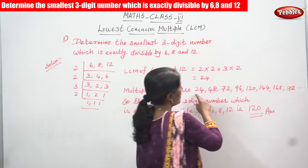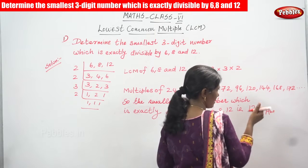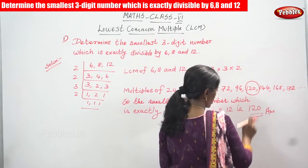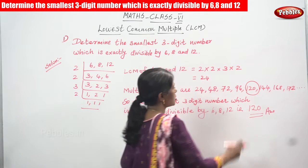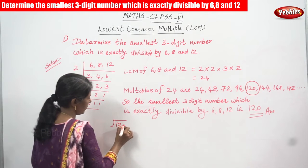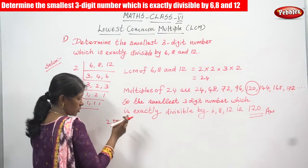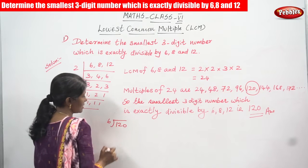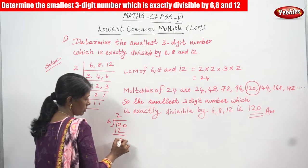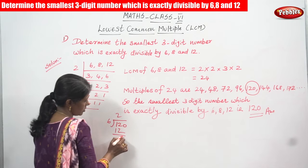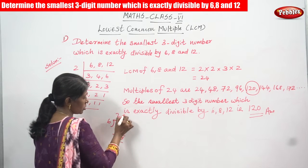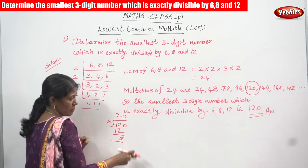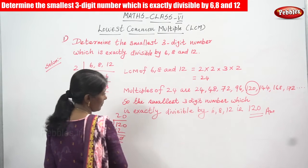The smallest 3-digit number exactly divisible by 6, 8, and 12 is 120, because 24, 48, 72, and 96 are all 2-digit numbers. From 120 onwards it becomes 3-digit. We verify: 120 divided by 6 — the quotient is 20 and the remainder is 0, so 120 is divisible by 6.